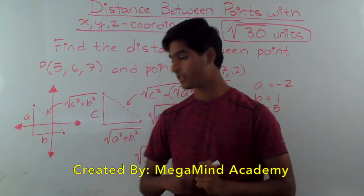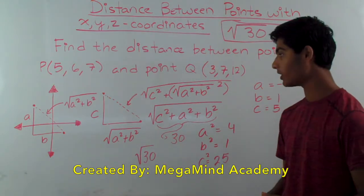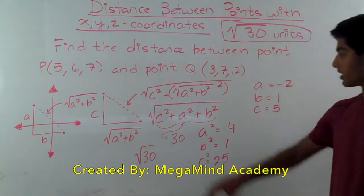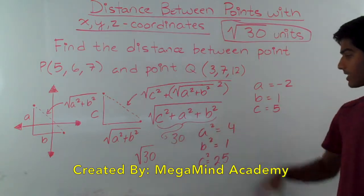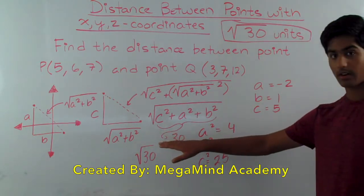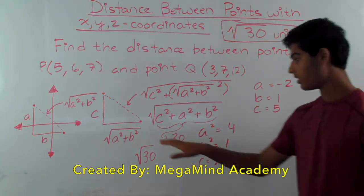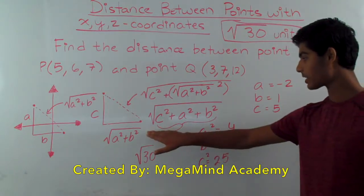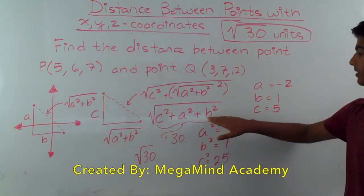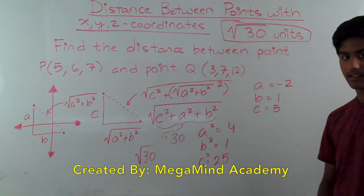So that's how we solve these problems. If you have to find a distance between points in the x, y, and z coordinate plane, you just take the square root of the height squared plus the length squared plus the width squared. That's how you get the answer.